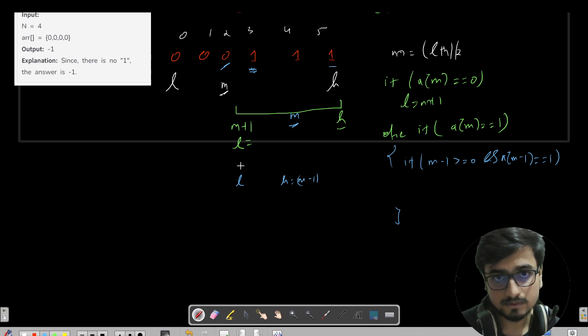So actually your binary search is going from l to m minus 1. So this point. I will just say high equals to m minus 1.